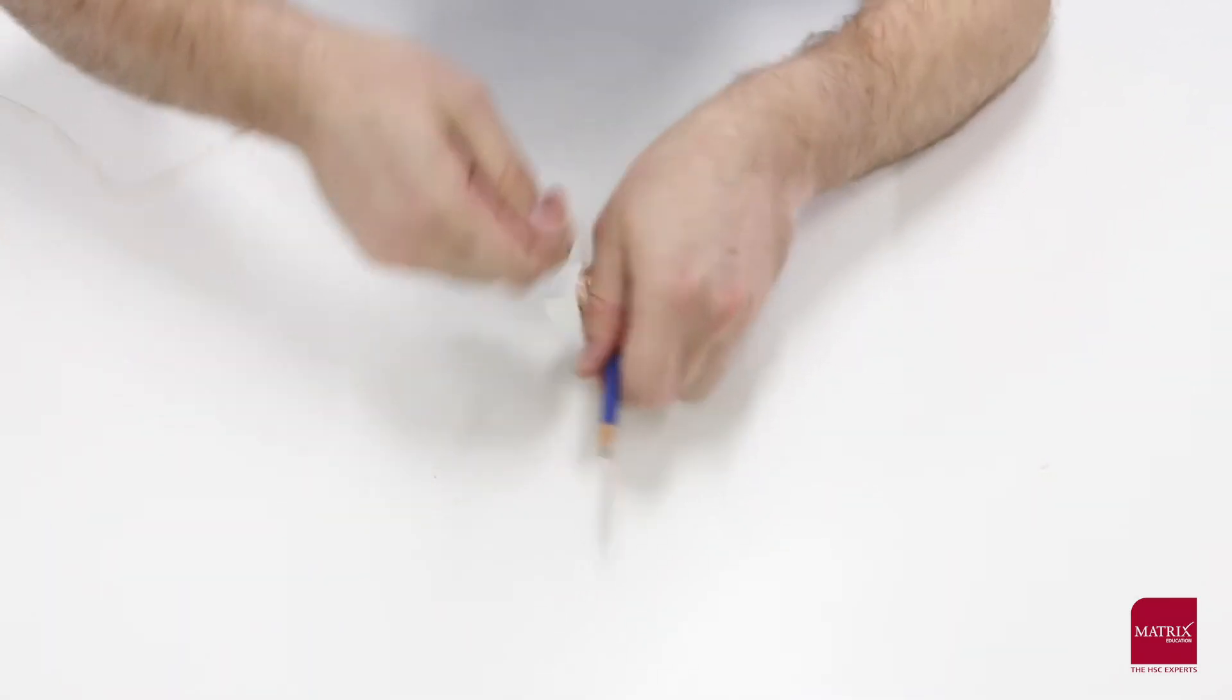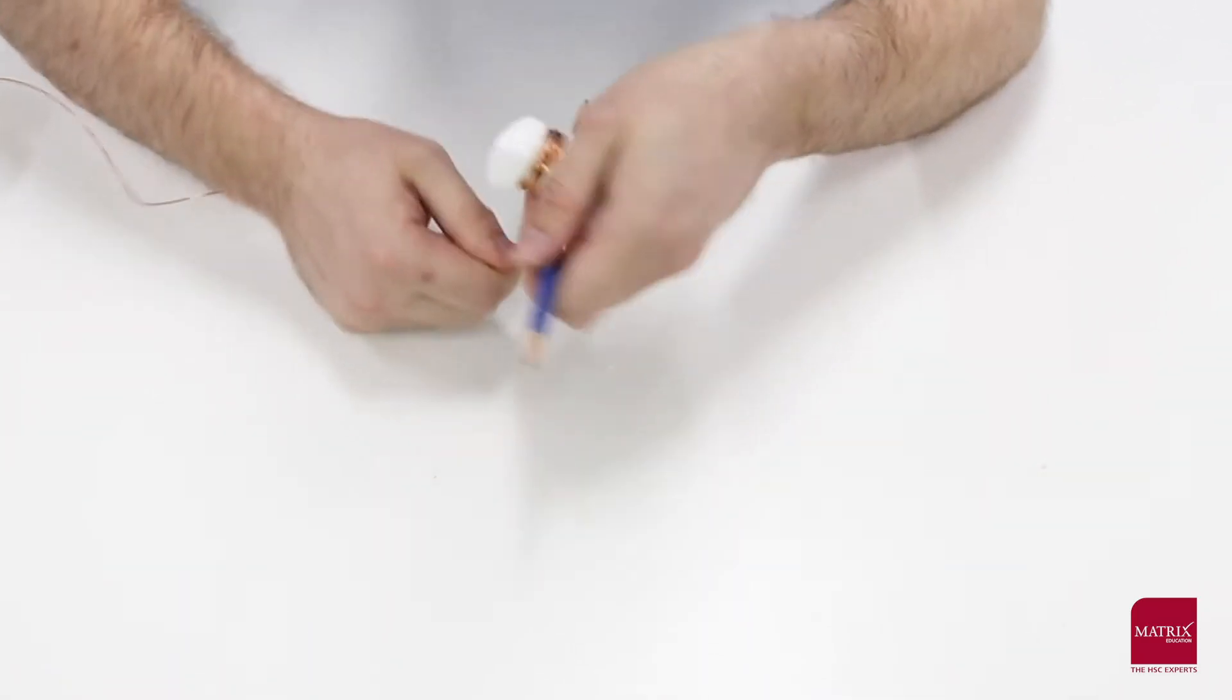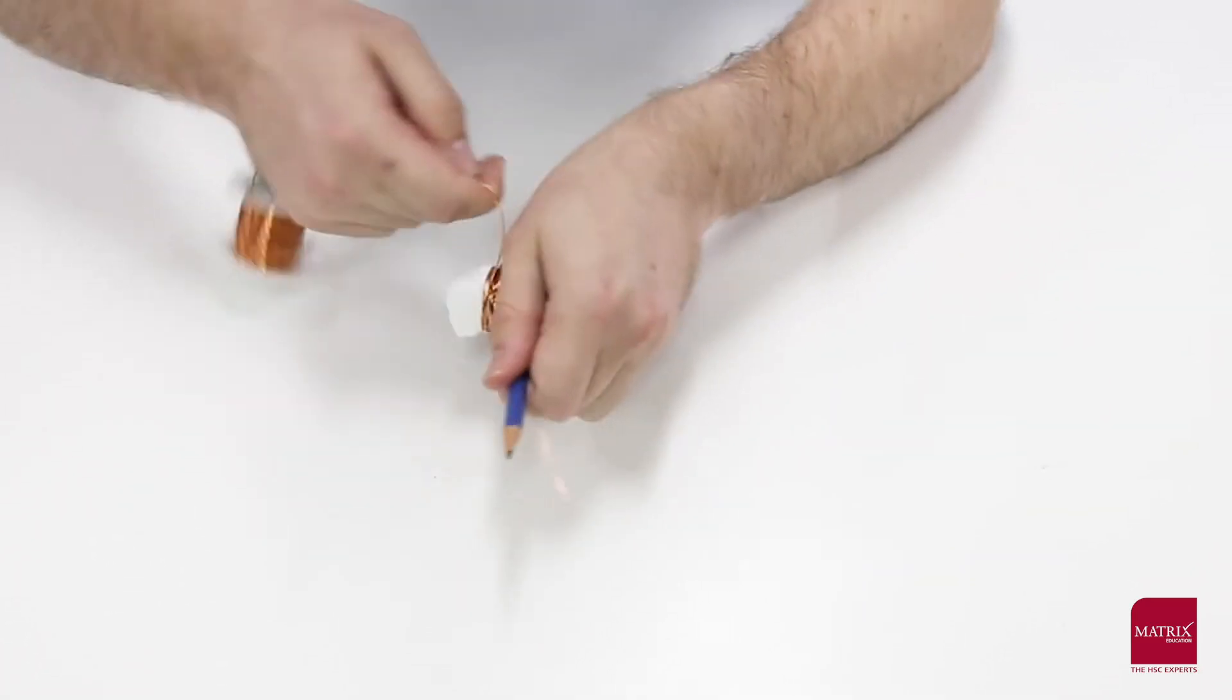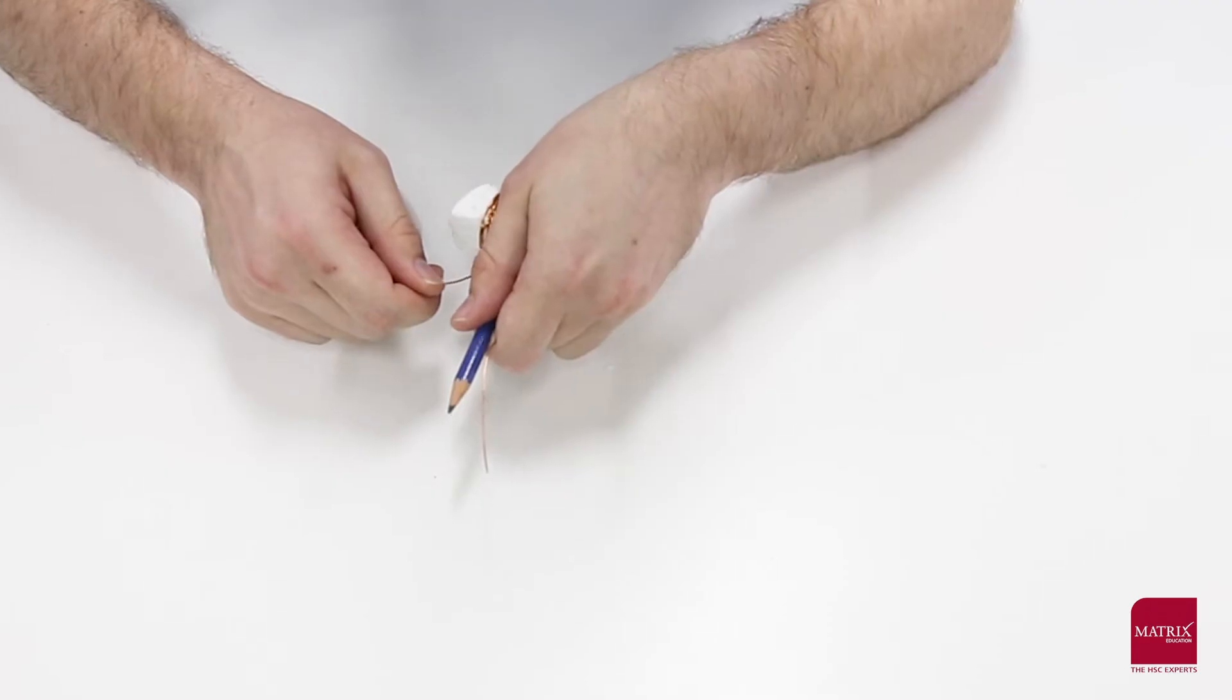Now we're going to wrap it around the base. It's up to you how much you wrap it, but the more turns that you have, the more torque your motor is going to be able to generate. I like to wrap one side first and then move on to the other side.